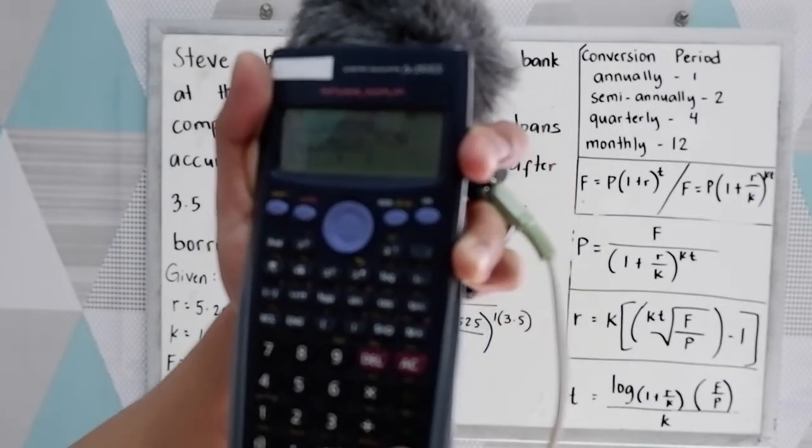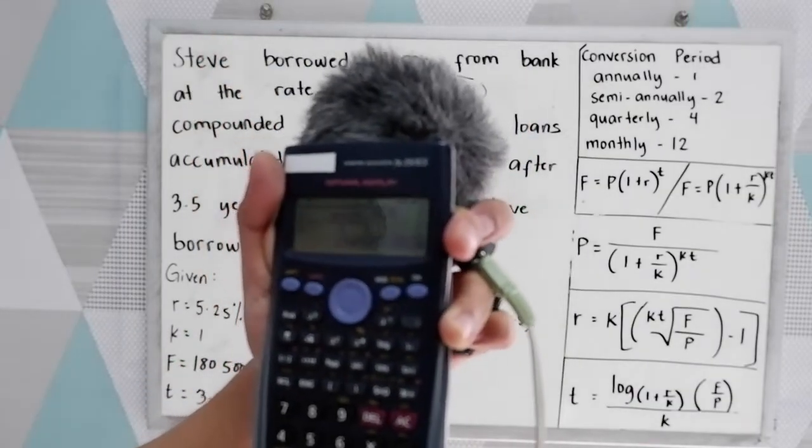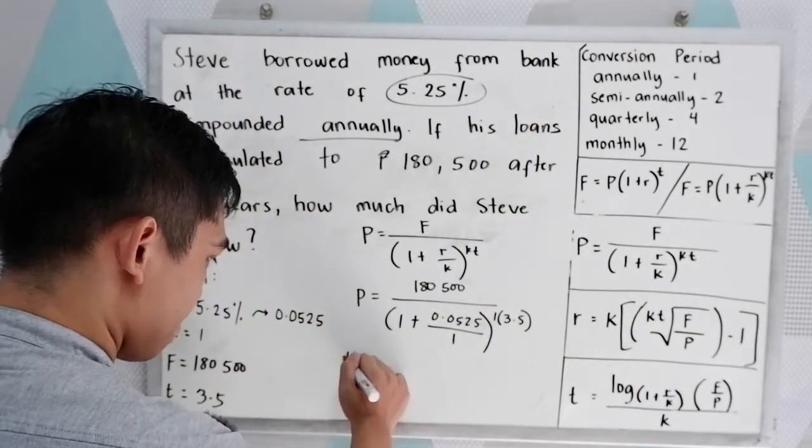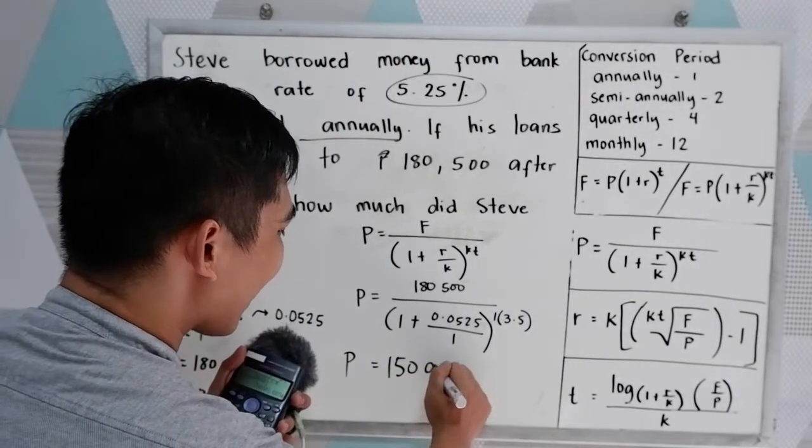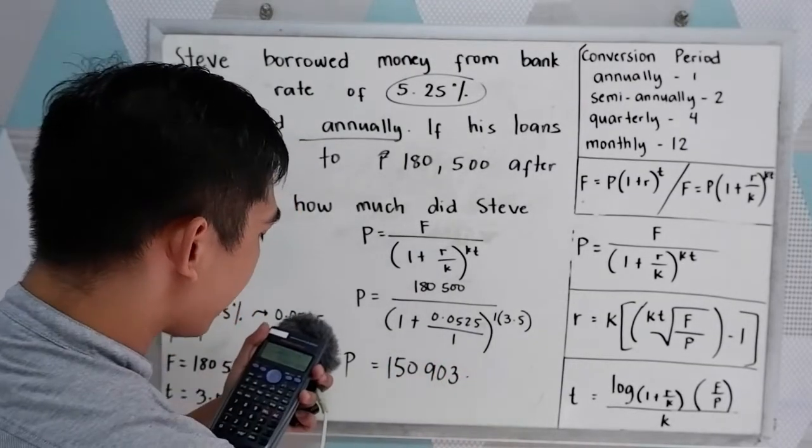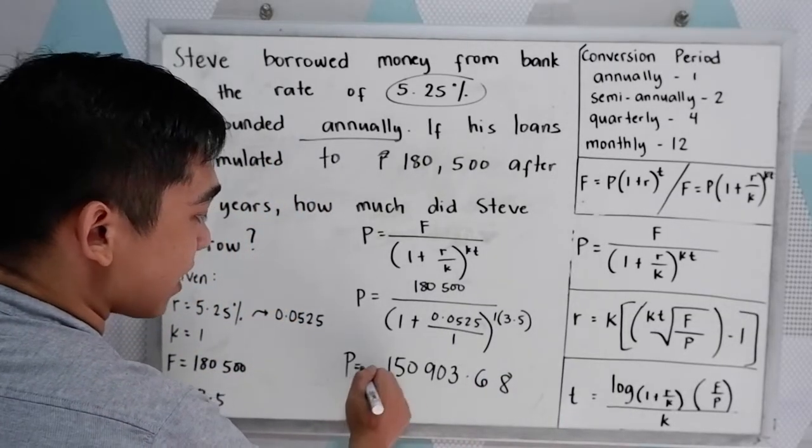Then the equal sign. So the principal is 150,903.68 pesos. Of course, don't forget the pesos.